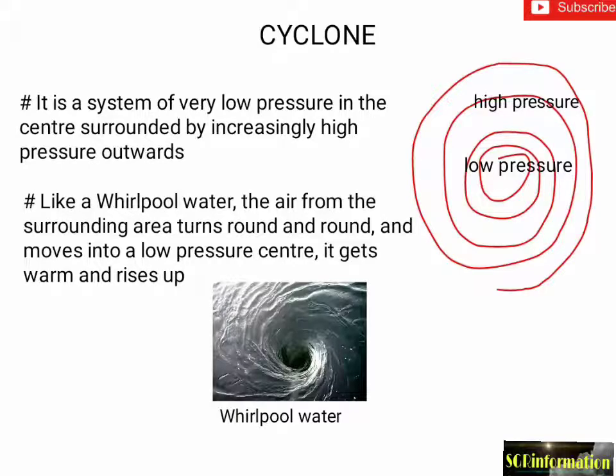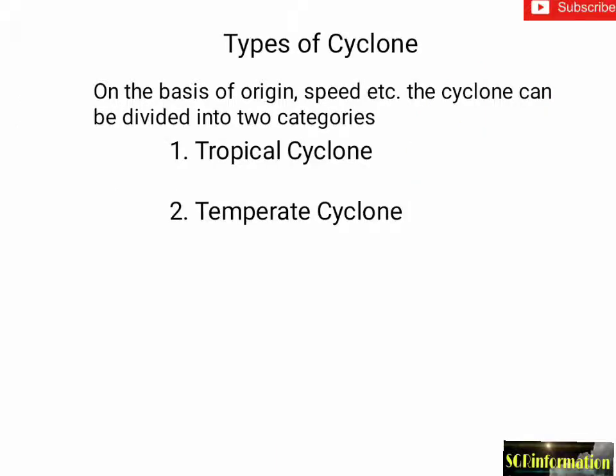Hello friends, welcome to my YouTube channel. Today I want to explain the basic concept of cyclone and anti-cyclone. A cyclone is a whirling wind — it is a system of very low pressure in the center, surrounded by increasingly high pressure outwards, like a whirlpool of water. The air from the surrounding area turns round and round and moves into a low-pressure center, where it gets warm and rises up.